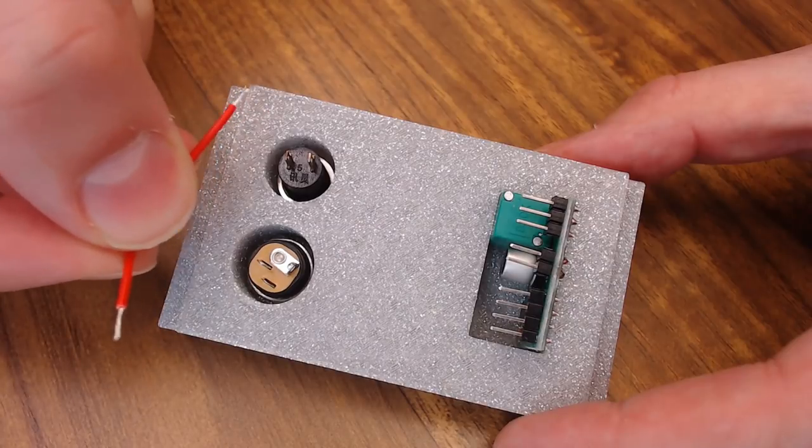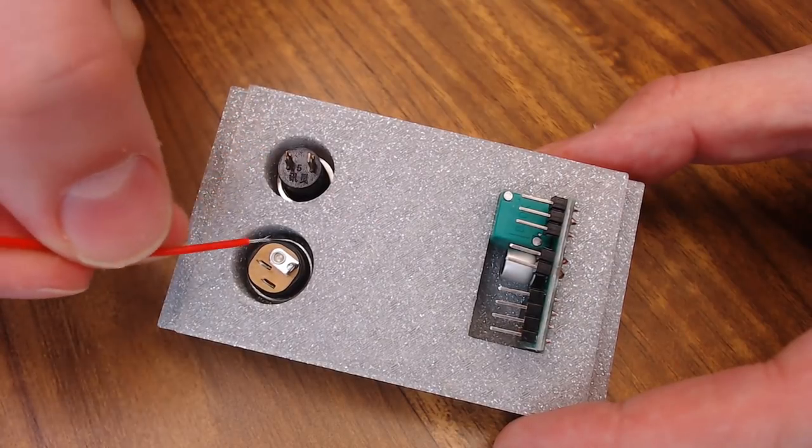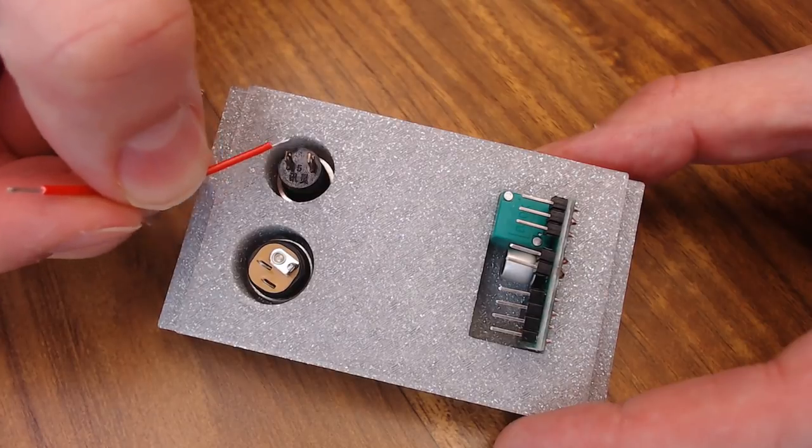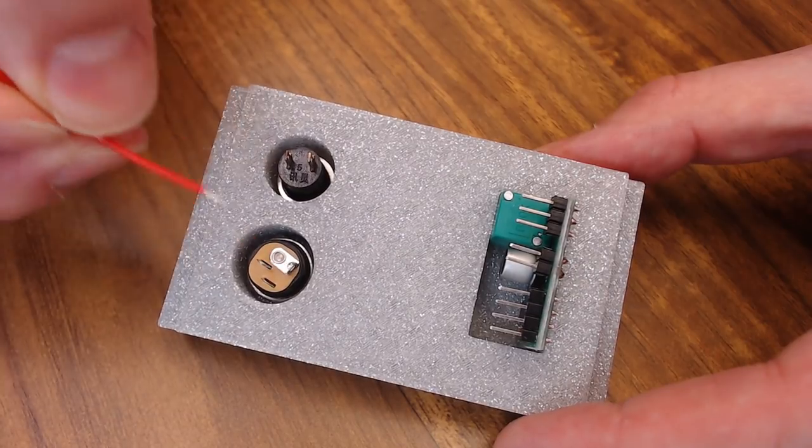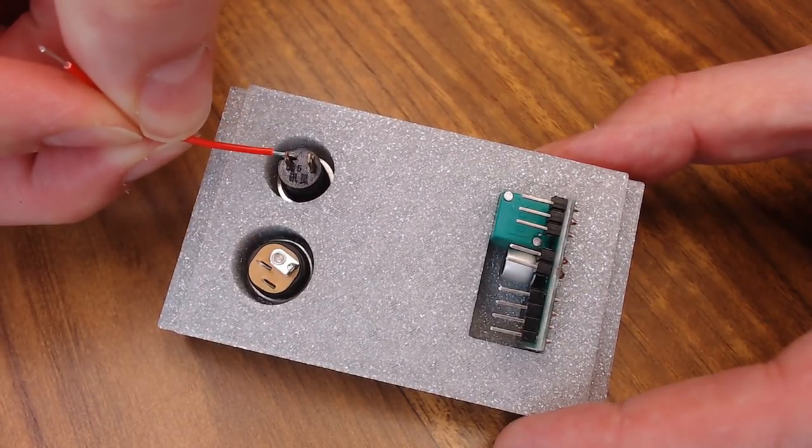Now I'm going to take a small piece of red wire to hook up from the power jack to the switch just to interrupt the power so we can turn it on and off. So I'm going to go from the center peg to this arm over here, like so.